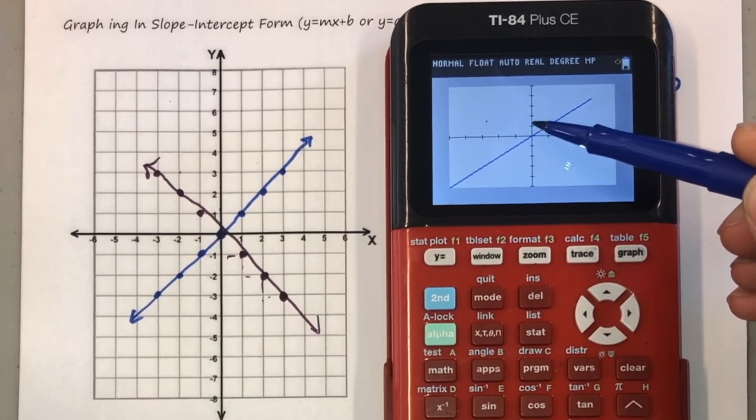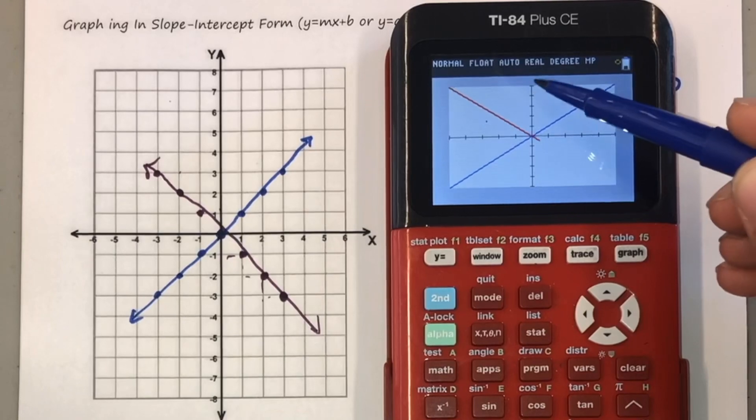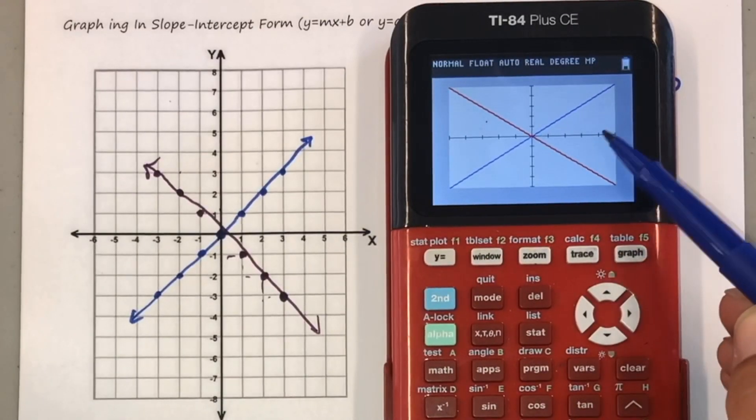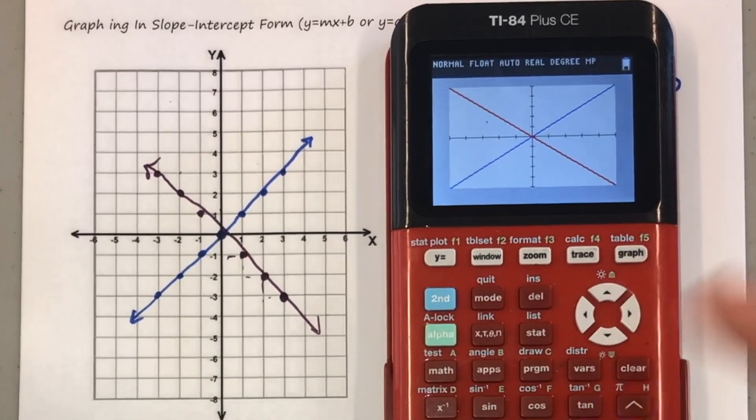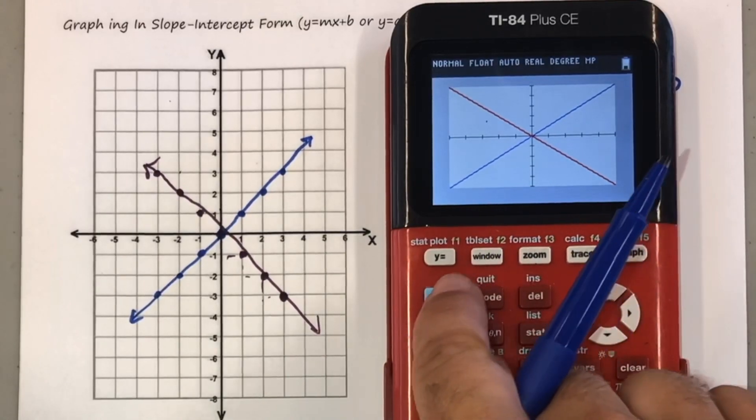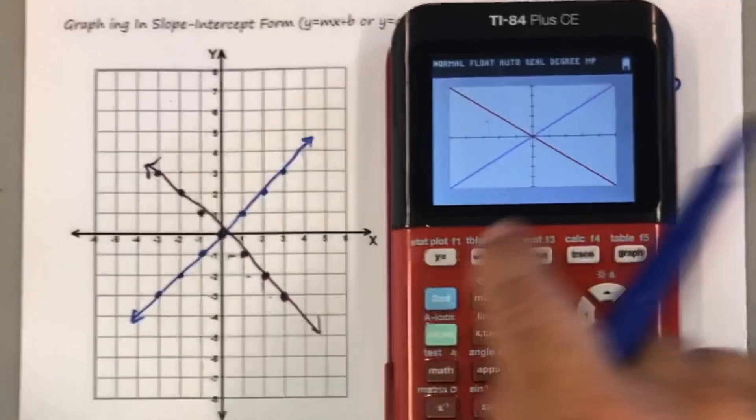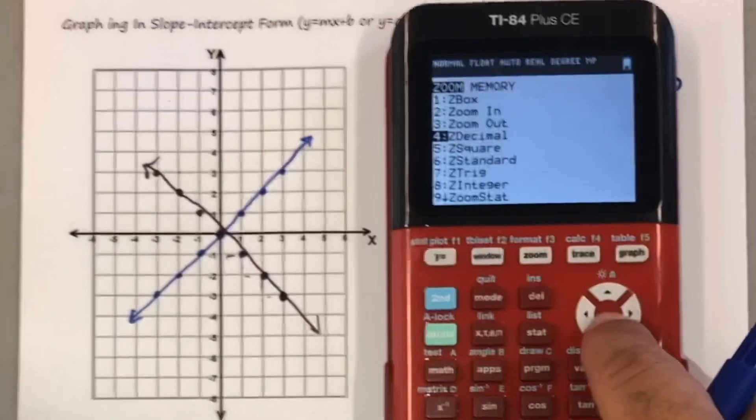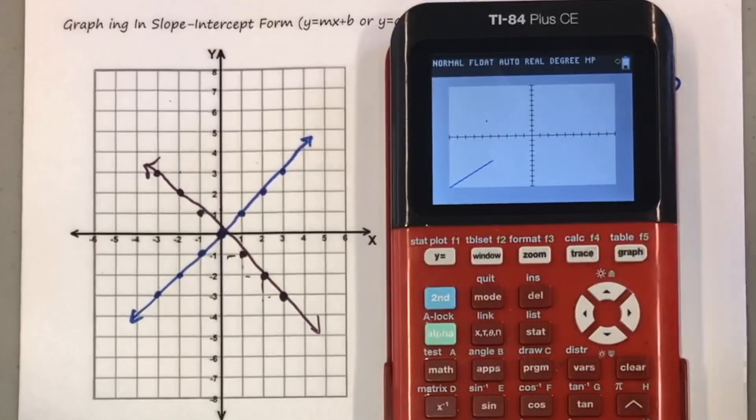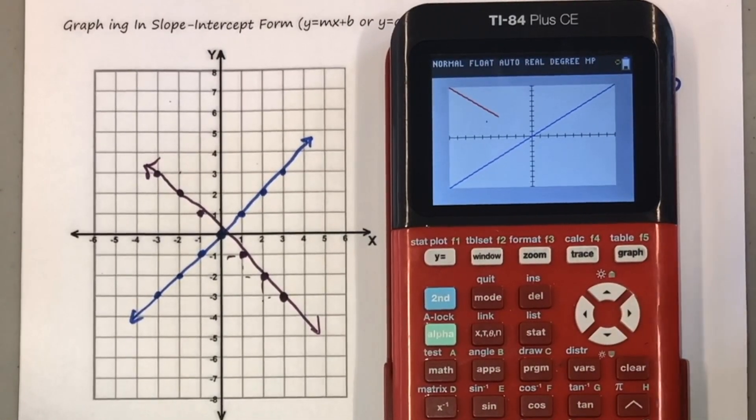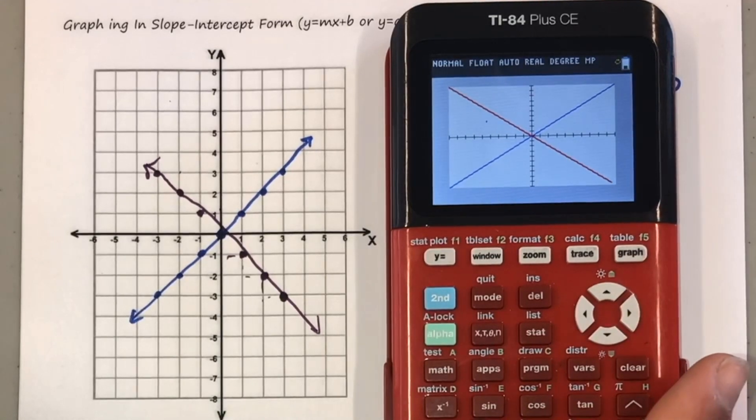Let's say I wanted to go back to the single slashes. Second zoom, z standard. That takes me back to my standard graph there. So here's a couple notes you guys could use.